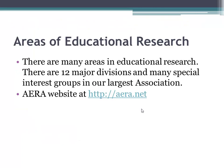There are many areas in educational research. Open your book to pages 6 to 7 and look at Table 1.1. There are 12 major divisions in our largest association and there are many special interest groups, abbreviated SIGs. Do you see any areas that are of interest to you? To learn more about the areas of educational research and the current issues, I recommend that you explore the AERA website at http://aera.net. By the way, the AERA has great student membership rates.